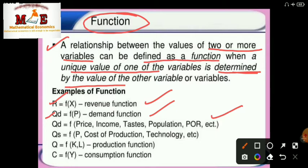Qs = f(P, cost of production, technology, etc.) is called the supply function. Q = f(K, L), where K represents capital and L represents labor, is known as the production function. Another type of function commonly used in economics is C = f(Y), where Y represents the income level, so it is our consumption function.